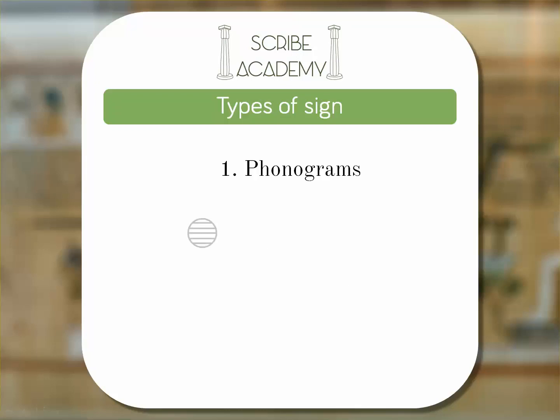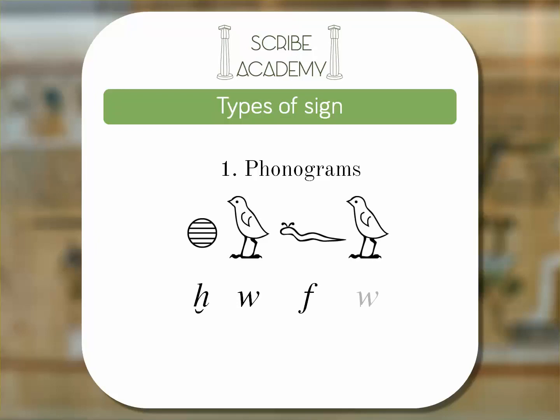In Egyptian, the circle with lines across makes a sort of softened K sound, like in the word 'lock.' The quail chick has the sound 'ooh,' and the hieroglyph of a horn viper has the sound F. Put these together and you get the name of a rather famous Pharaoh.